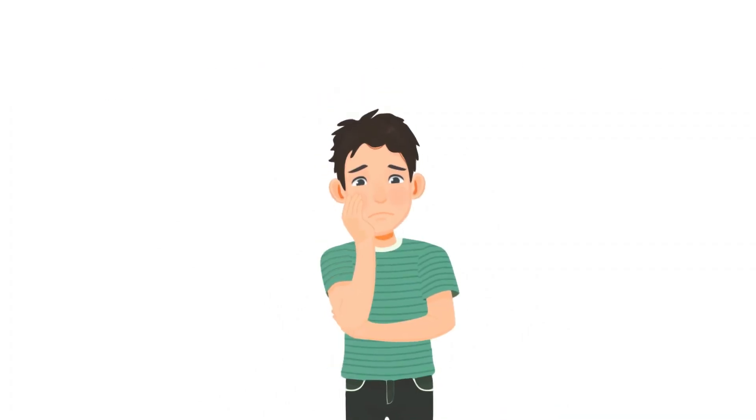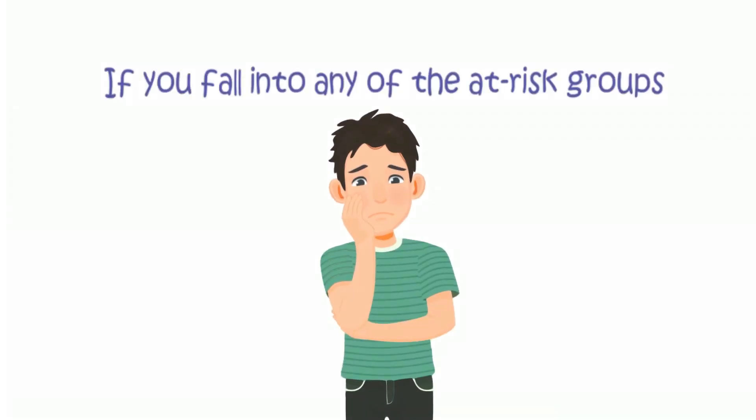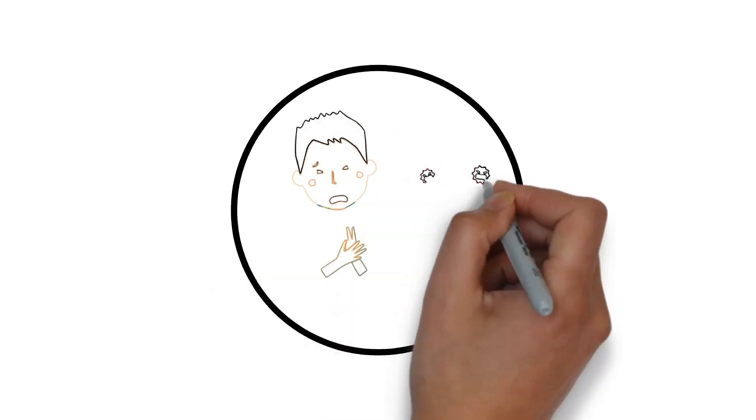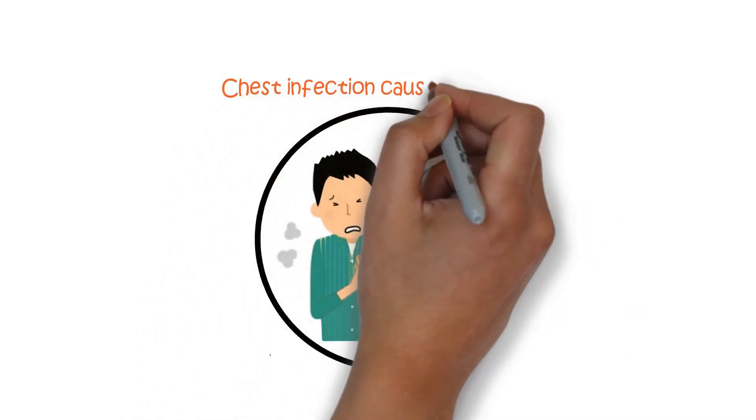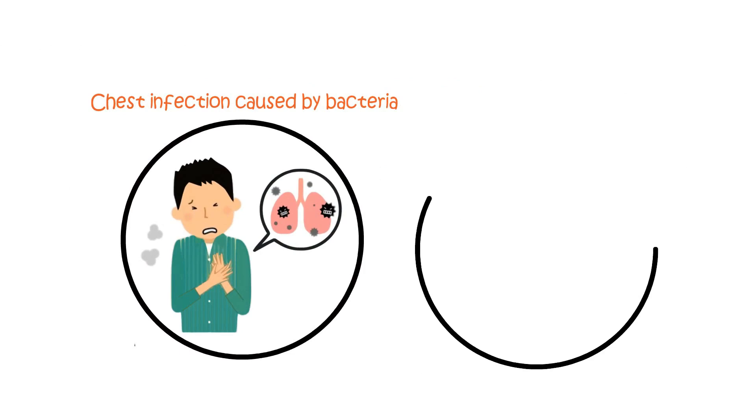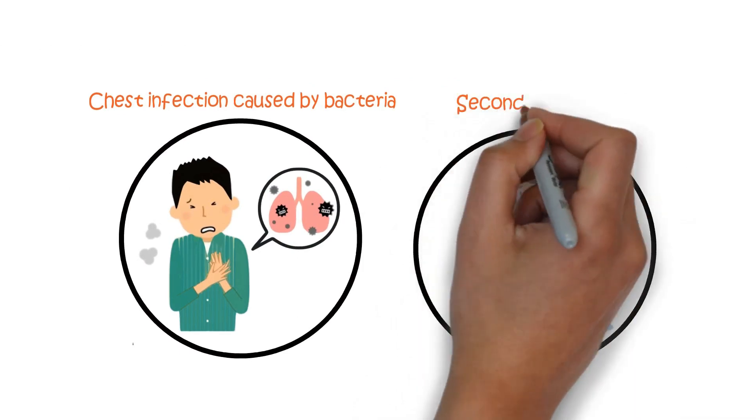Complications are more likely to arise if you fall into any of the at-risk groups. The most prevalent complication is the onset of a chest infection caused by bacteria, which can occur alongside the viral infection, a secondary infection.